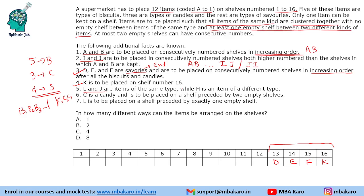L and J are items of the same type while H is an item of a different type. We have A and B also of the same type. So clubbing: A and B are the same type; I and J are the same type; L and J are the same type. Therefore I, J and L are all of the same type. And H is a different type than I and J.